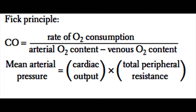Clinically, we tend to measure cardiac output by the Fick equation. The Fick equation is: cardiac output equals the rate of oxygen consumption divided by the difference between the arterial oxygen content minus the venous O2 content. The Fick equation is generally considered the most reliable method we have of measuring cardiac output clinically.